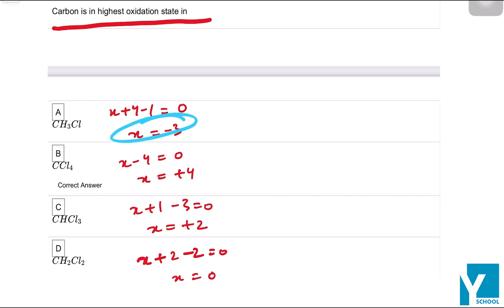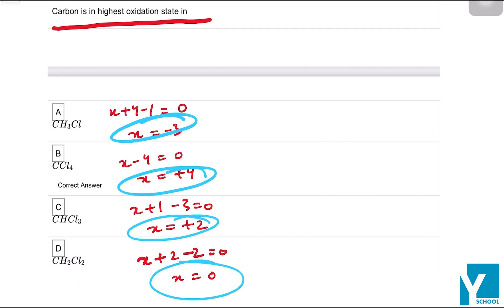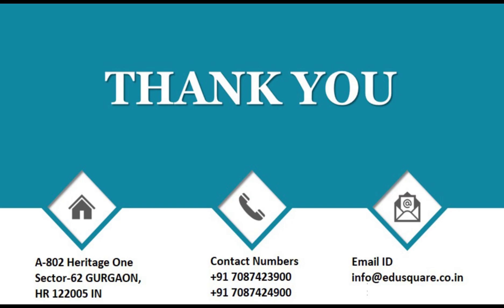So you can see clearly the highest oxidation state is present in CCl₄, so the correct answer is B. Thank you.